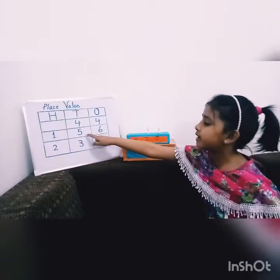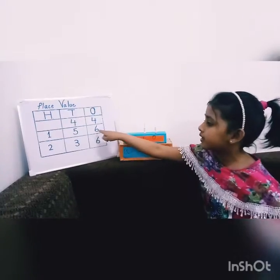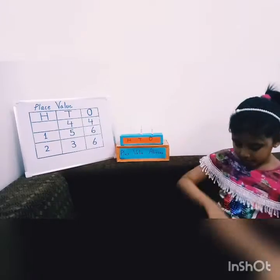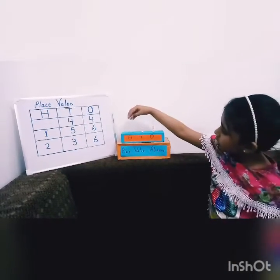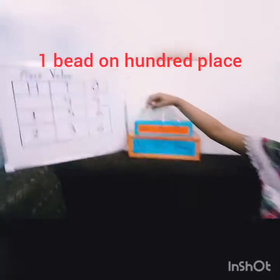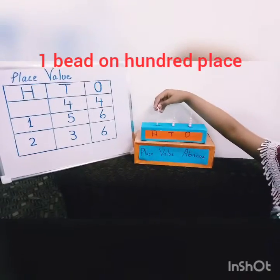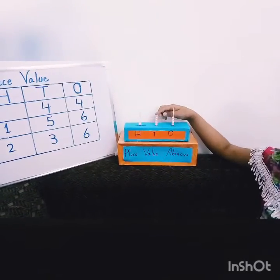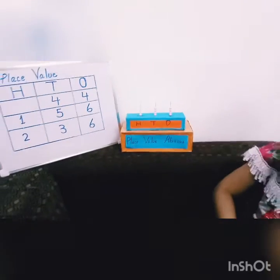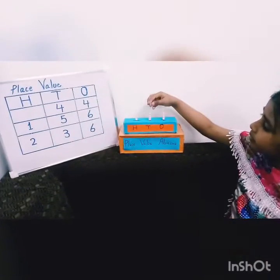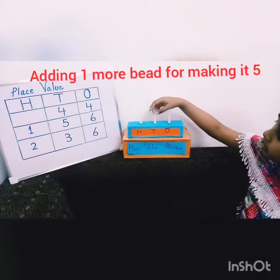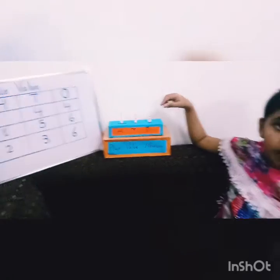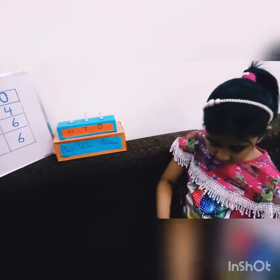My next number is 156. I will put 1 bead in the 100's place. Here is already 4, so I will put 1 more bead — it will make 5. Here is already 4, so I will put 2 more — it will make 6.